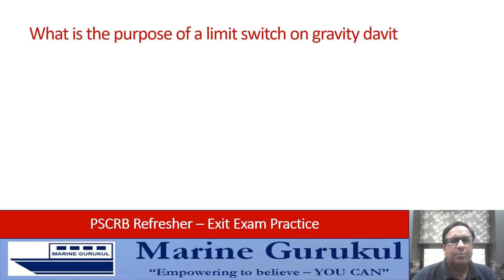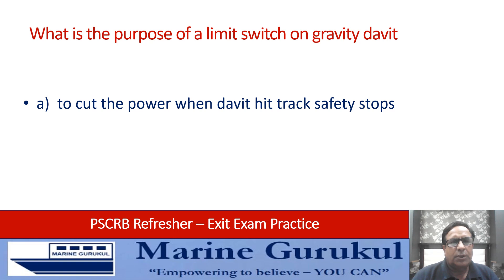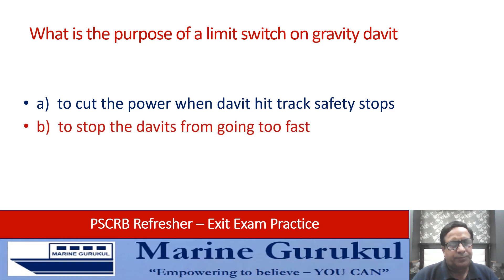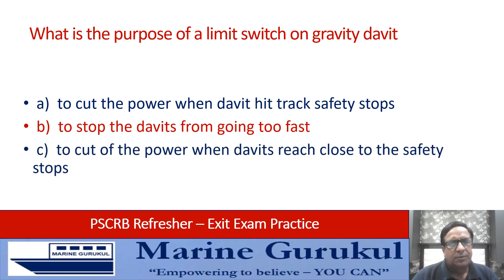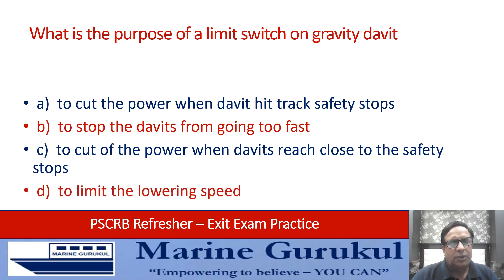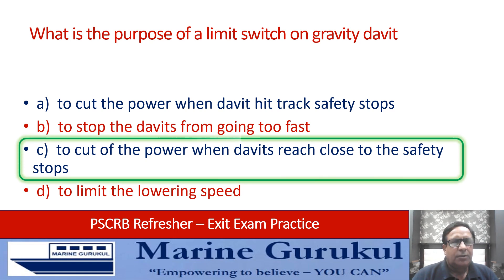What is the purpose of a limit switch on the gravity davit? To cut the power when the davit hits the track safety stops, to stop davits from going too fast, to cut power when davits reach close to the safety stops, or to limit the lowering speed? The answer is C — to cut the power off when the davit reaches close to the safety stops.